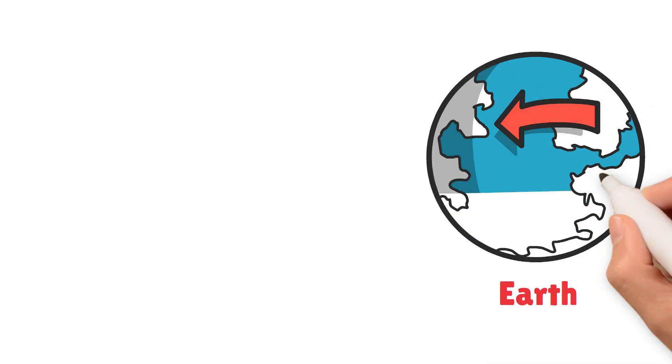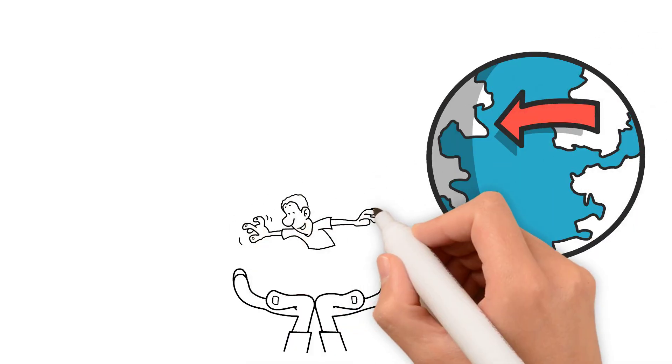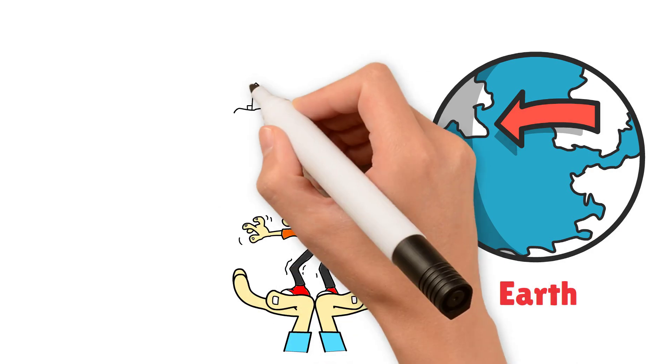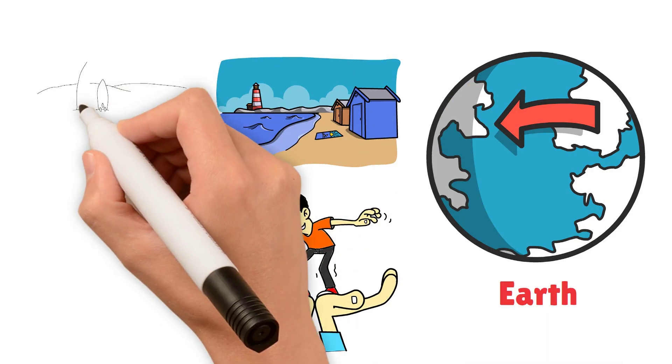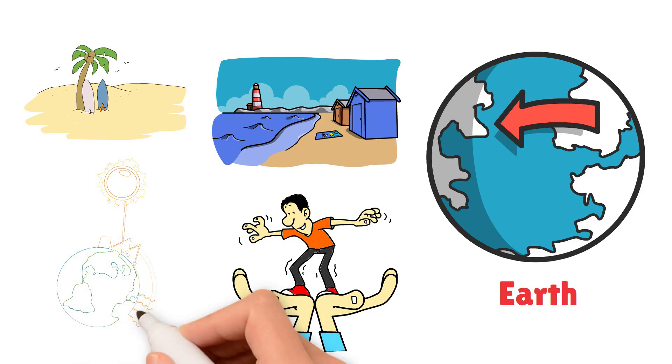Next comes Earth, our home planet. Earth is a unique planet because it is the only one known to have life. It has oceans, land, and an atmosphere that helps to keep it warm.